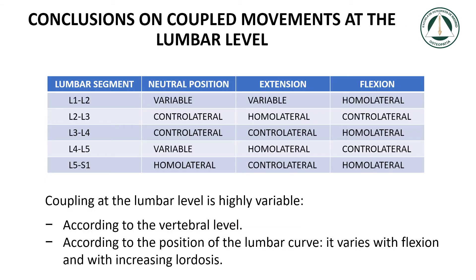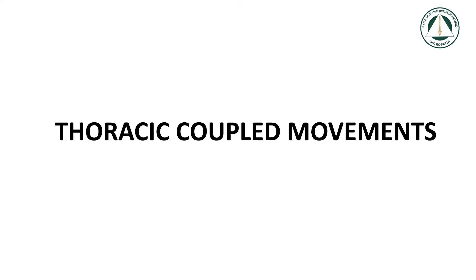Coupling at the lumbar level is highly variable according to the vertebral level and according to the position of the lumbar curve — it varies with flexion and with increased lordosis. It is worth noting in this summary table that the coupling is reversed between flexion and extension: the coupling that was ipsilateral becomes contralateral and vice versa.